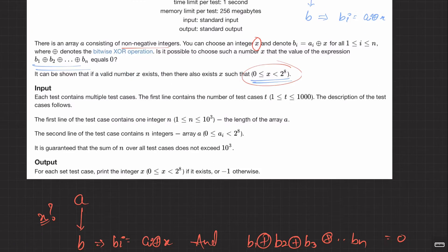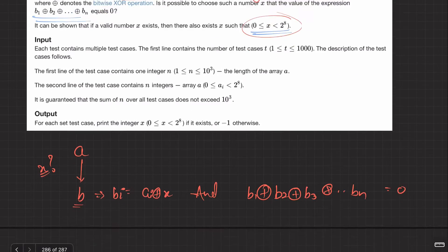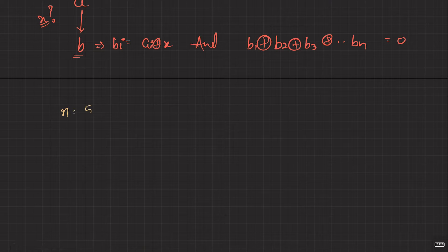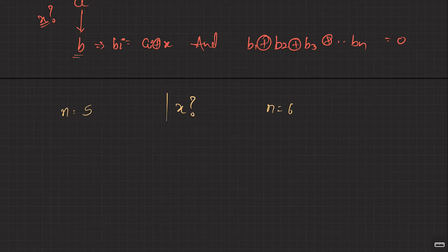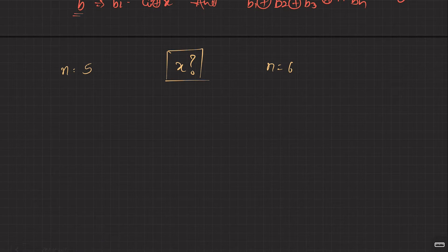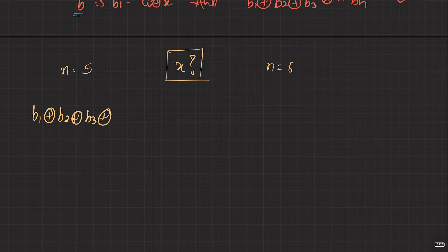How do you think about this question? By just looking at the numbers it won't make much sense, so you can take a small example. Let's say my array has five elements. Our goal is to find this number x. We want b1 XOR b2 XOR b3 XOR b4 XOR b5 equals zero.